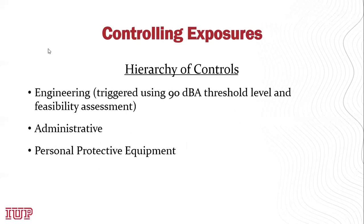The hierarchy of controls for noise exposures is the same hierarchy that applies to any workplace hazard. The first and most preferred is engineering controls — if you can engineer the hazard out, that's ideal because it permanently corrects the issue. The second tier is administrative noise controls, such as worker rotation. The last preferred method is personal protective equipment or hearing protection.